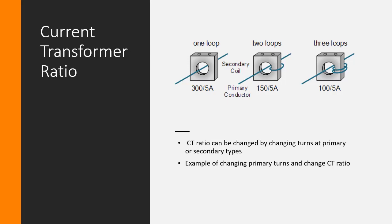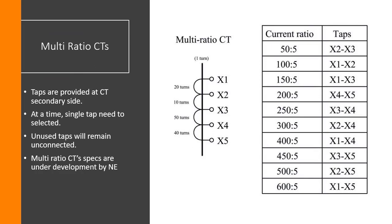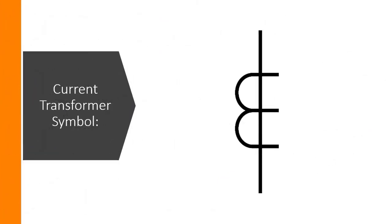This is an example of multi-ratio CTs. We have to understand that at a time we can only select one tap, and the unused taps will remain unconnected. They won't be connected or shorted. In multi-ratio CTs being developed, the taps are available on the secondary side only. CT selection and number of taps and turns selection are made on the secondary side.